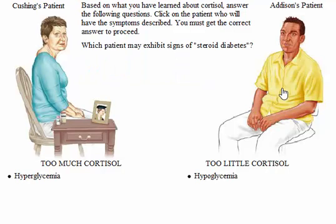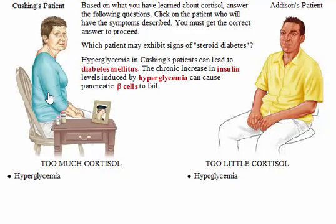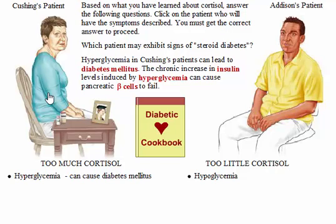Which patient may exhibit signs of steroid diabetes? Hyperglycemia in Cushing's patients can lead to diabetes mellitus. The chronic increase in insulin levels induced by hyperglycemia can cause pancreatic beta cells to fail. These high levels of insulin might also explain the redistribution of body fat. The action of insulin on normal body fat stores is antagonized by cortisol. In other body areas, like the face and upper back, insulin can promote lipogenesis.